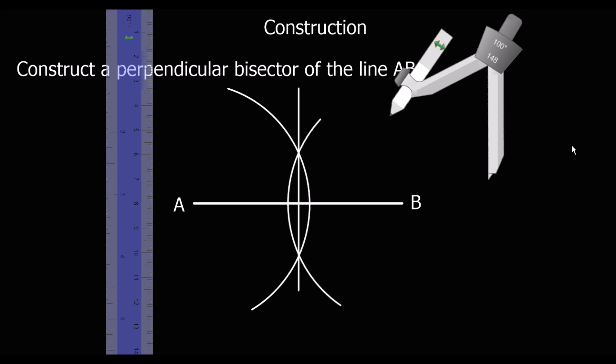There we've got a perpendicular bisector. This line here is a perpendicular bisector of A and B.